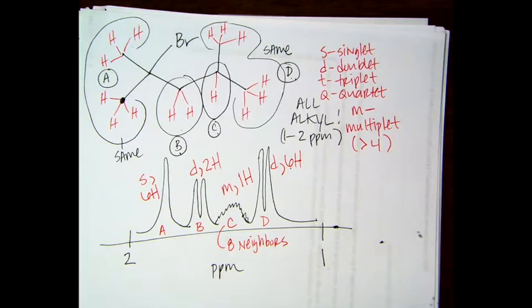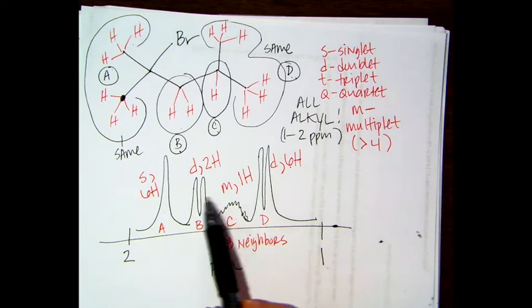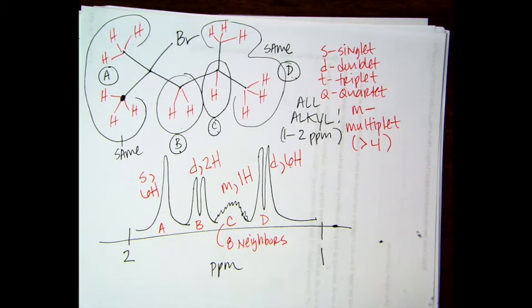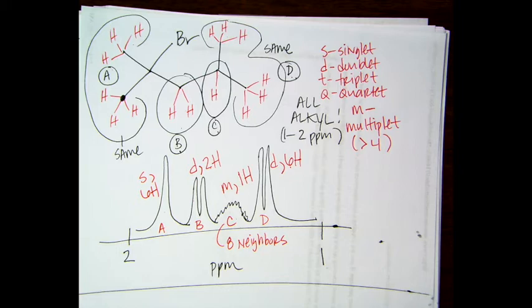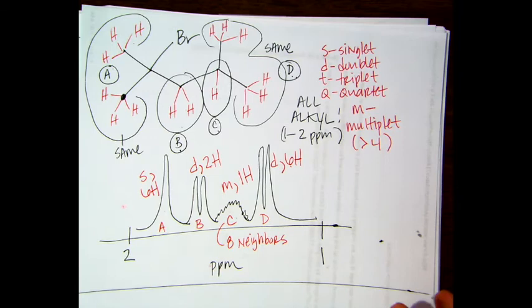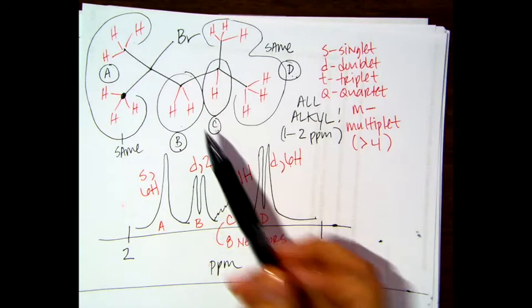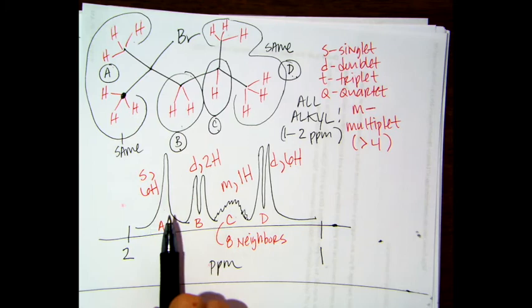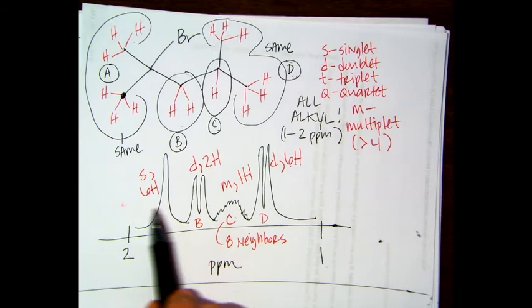Sometimes peaks overlap with each other and it gets messy — you might have a doublet poking out of a multiplet. Usually you start with a spectrum, not a structure. In lab we label peaks left to right as A, B, C, D and then assign them to the structure. Normally you're going the other way — starting with a spectrum and working toward the structure.